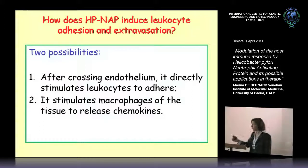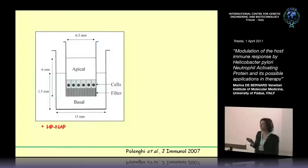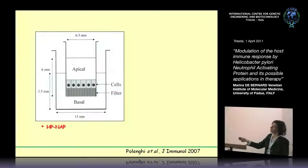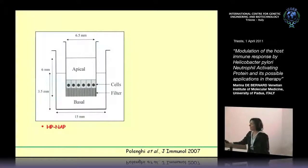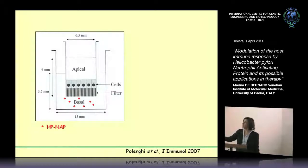In order to address these two possibilities, together with Fleur Bossi, we used the transwell system, a system which permits to divide a well into two chambers, the apical one and the basal one. On the filter, we can seed endothelial cells and wait until they grow as a monolayer. When the monolayer is formed and cells are correctly polarized, we can apply H. pNAP in the basal chamber.